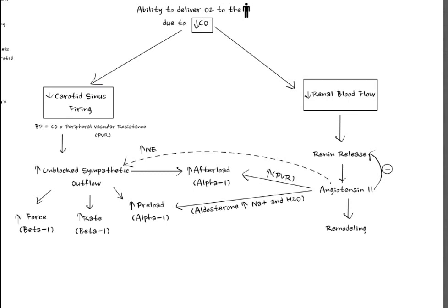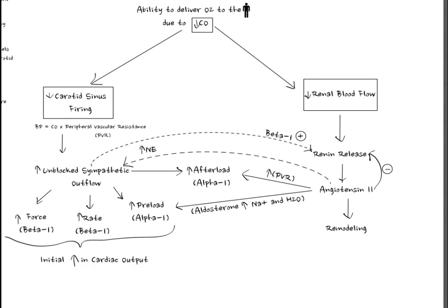Sympathetic outflow from short-term blood pressure control can also impact long-term control through beta receptors in the kidney. The increased norepinephrine from sympathetic outflow activates beta-1 receptors in the kidney, also activating renin release. So initially, sympathetic increases that occur as compensation do actually increase cardiac output, but over the long run the increase in peripheral vascular resistance decreases cardiac output.